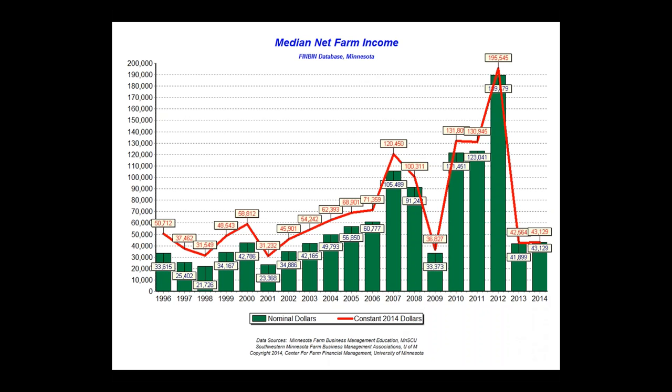I'm going to start out by talking about the emerging financial stress. This is a chart of net farm income over the last almost 20 years in Minnesota, which is very reflective of the whole country. Starting about 2001 or 2002, we had increasing profitability almost every year except for one aberration in 2009. In several of those years we had record profits. When we hit 2007 we thought that was record profits — we'd never had profits on a per-farm basis like that. For the most part, it just kept climbing up through 2012.